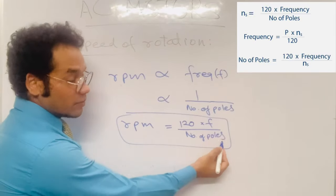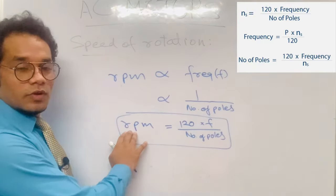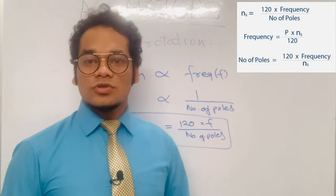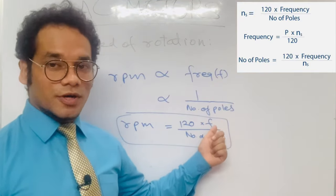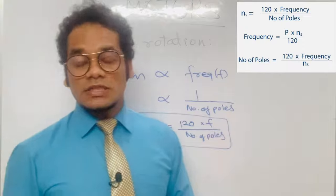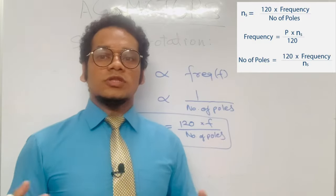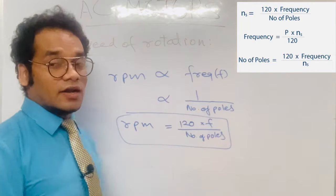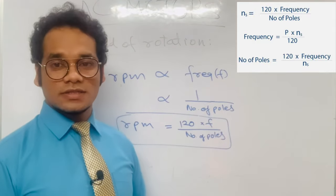In exams, you may be given the number of poles and frequency to calculate the RPM. In aircraft electrical systems, the frequency used is 400 Hz, so if only the number of poles is given, assume frequency is 400 Hz. Since RPM and number of poles are inversely proportional, the motor with more poles will have a lesser RPM, provided other factors remain constant.